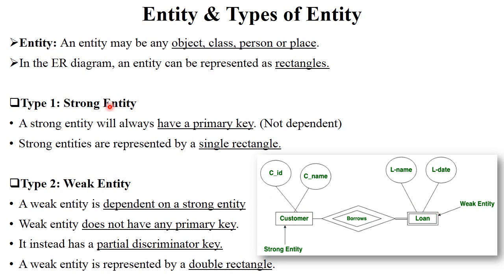Entity is divided into two types: strong entity and weak entity. A strong entity always has a primary key and is not dependent on other entities. For example, customer is a strong entity because it has a primary key — customer ID and customer name, where customer ID is the primary key. On the opposite side is weak entity, which is completely dependent on strong entity. Loan depends on the customer — loan is a weak entity and does not have a primary key.